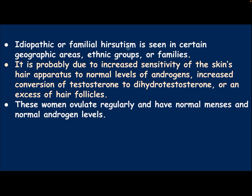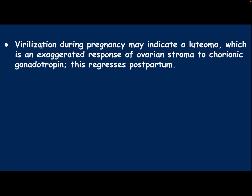Idiopathic or familial hirsutism is seen in certain geographic areas, ethnic groups, or families. It is probably due to increased sensitivity of the skin's hair apparatus to normal levels of androgen, increased conversion of testosterone to dihydrotestosterone, or an excess of hair follicles. These women ovulate regularly and have normal menses and normal androgen levels. Virilization during pregnancy may indicate a luteoma, which is an exaggerated response of ovarian stroma to chorionic gonadotropin. This regresses postpartum.